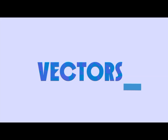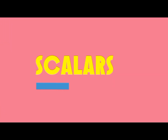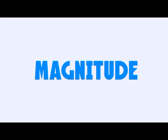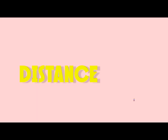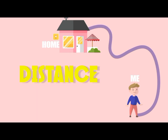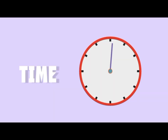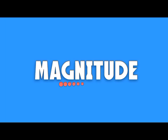In order to understand vectors, you first need to know what scalars are. A scalar has a magnitude and tells you how much of something there is — just like the volume of liquid in your milkshake, the distance of you from your house, or all the time elapsed since the start of this video.